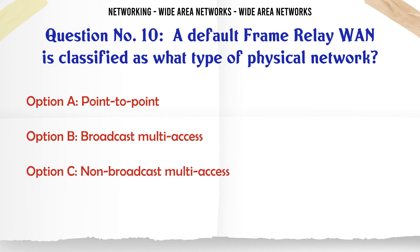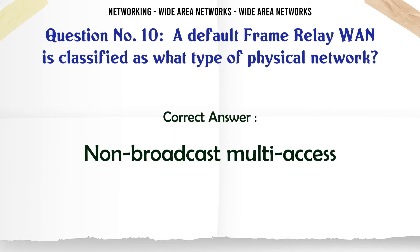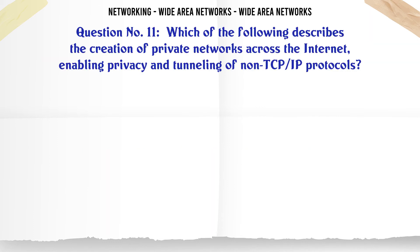A default frame relay WAN is classified as what type of physical network? A. Point-to-point. B. Broadcast Multi-Access. C. Non-Broadcast Multi-Access. D. Non-Broadcast Multi-Point. The correct answer is C: Non-Broadcast Multi-Access.